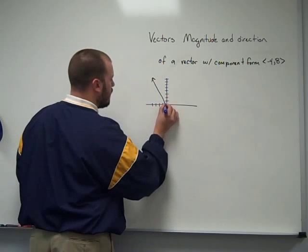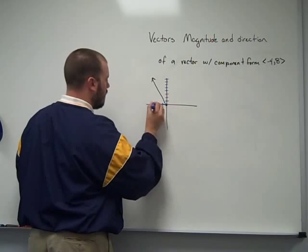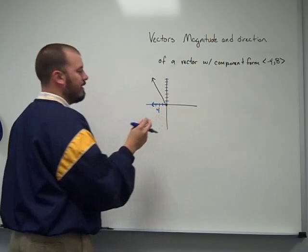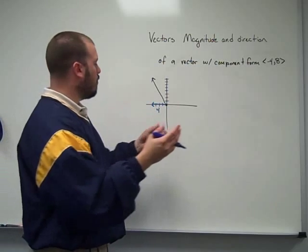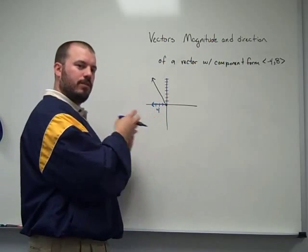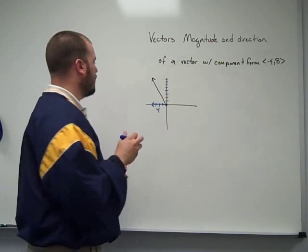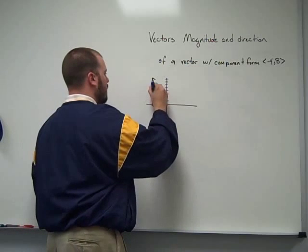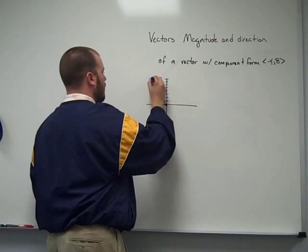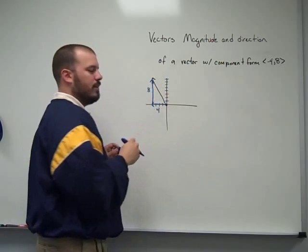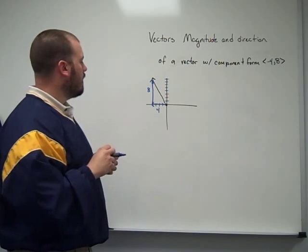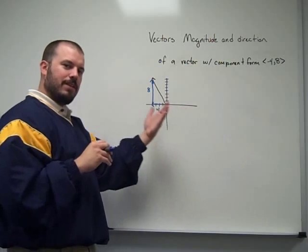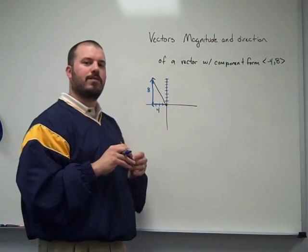So the x component, it has a length, a magnitude of 4 left or in this direction, the negative x direction, and 8 in a positive y direction. I'm not writing the negative there because I've indicated negative by moving to the left already.